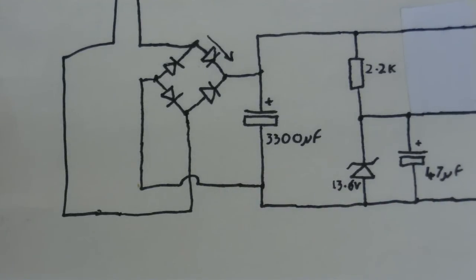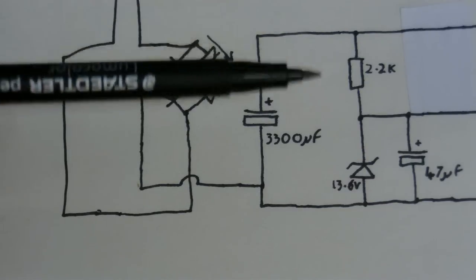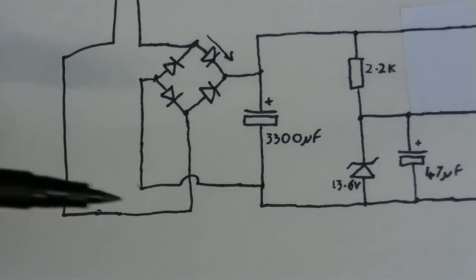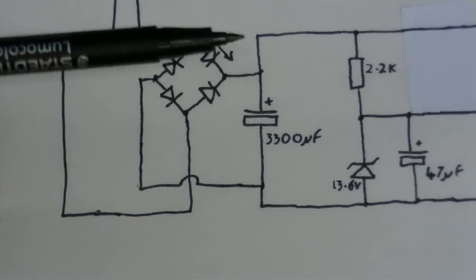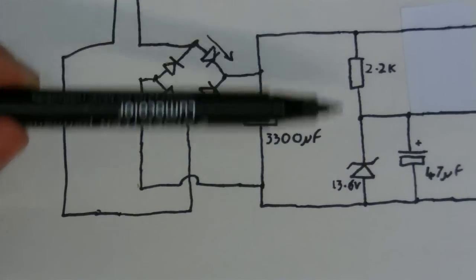The only problem is when you rectify AC to DC, it's still got some of the characteristics of that AC. So even though it's now going in the same direction, it's still going up and down. So to smooth that out, there's a capacitor here which filters out most of that, but there's still a little bit of up and down ripple. So that's where these two come in.